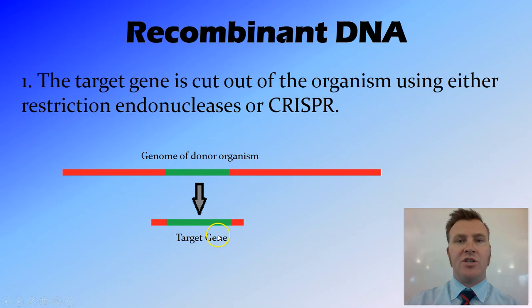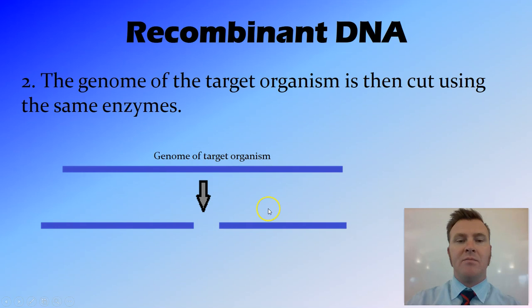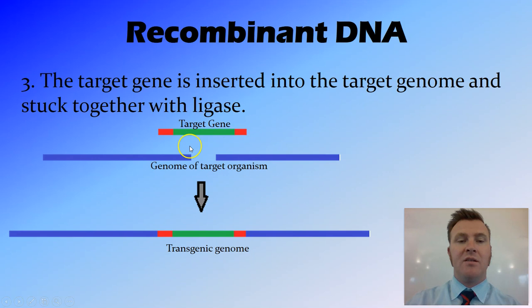You then take the genome of the target organism and cut it at the point where you want to insert that gene, so it's been cut and it's got the sticky ends on either side of that DNA. We then take the target gene and insert it into the genome of the organism and bond it together with ligase, and that will create our transgenic genome — you can see the original genome of the organism with our transgene sitting in it.